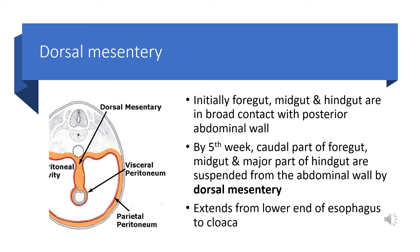The dorsal mesentery extends from the lower part of the esophagus to the rectum as a continuous sheet of tissue attached to the posterior body wall, providing a pathway for blood vessels, lymphatics, and nerves to the gut tube and its derivatives. The various regions of the dorsal mesentery are named according to the parts of the gut tube to which they are attached.